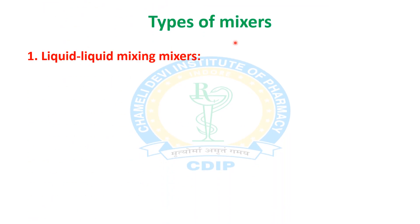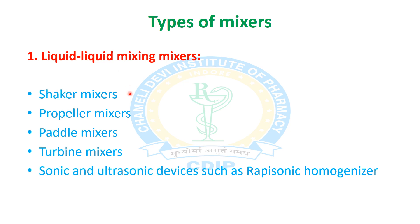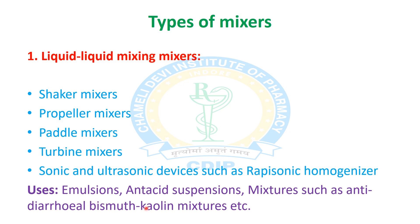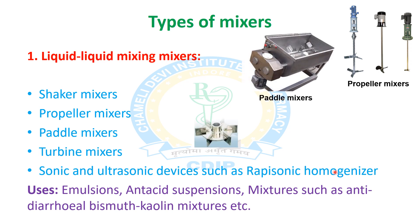The next topic is the types of mixers. For liquid-liquid mixing, examples are shaker mixers, propeller mixers, paddle mixers, turbine mixers, and ultrasonic devices such as rapisonic homogenizers. These are used in the preparation of emulsions, antacid suspensions, and mixtures such as bismuth kaolin mixture. Rapisonic homogenizers are specifically used in the preparation of emulsions. Figures shown include propeller mixers, paddle mixers, and turbine mixers.